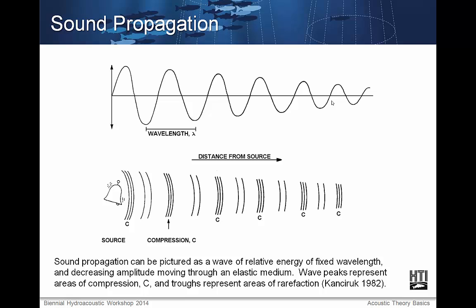A description of sound waves in water. Sound propagation can be pictured as a wave of relative energy of fixed wavelength and decreasing amplitude moving through an elastic medium. Wave peaks represent areas of compression, and troughs represent areas of rarefaction. The top figure shows level of compression as a function of distance, with the horizontal line being undisturbed. The bottom figure is a representation of matter, where each curved line can be thought of as where particles are close together, and the areas where the curved lines are far apart is where the medium is rarefied.